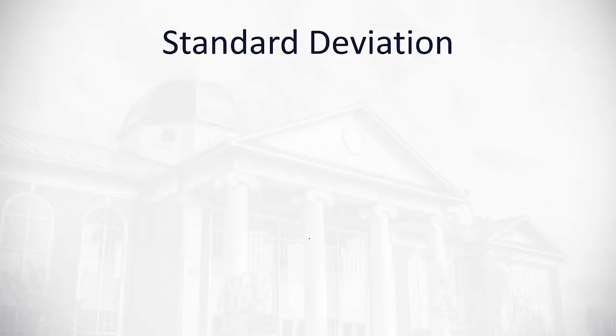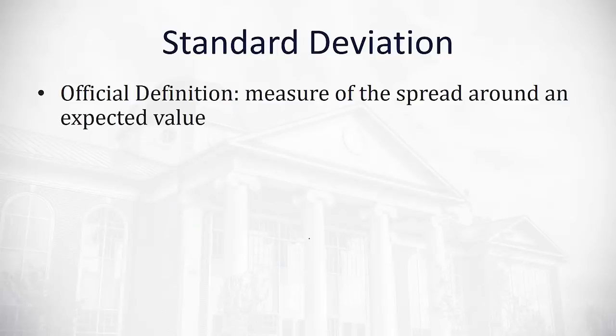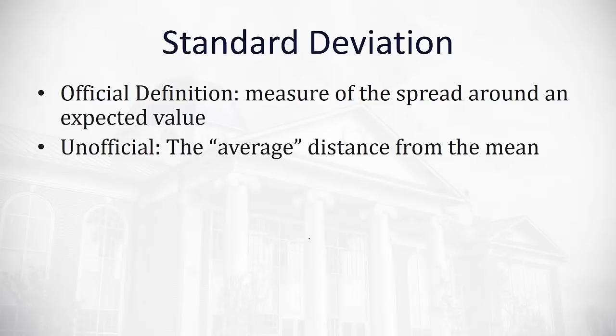This is why we're usually more interested in the standard deviation, which officially is a measure of the spread around an expected value. An unofficial definition that I like is you could think about it as the average distance the data values are from the mean. How spread out is everything around the mean?